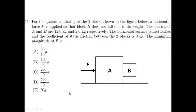Welcome to Singapore Junior Physics Olympiad 2012 General Round Question 11. For the system consisting of the two blocks shown in the figure below, a horizontal force F is applied so that block B does not fall due to its weight.